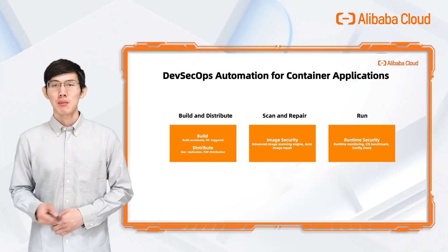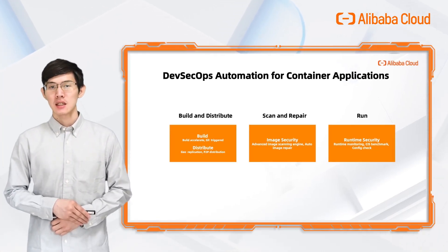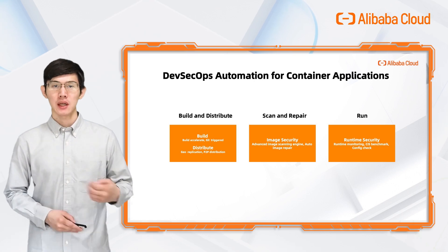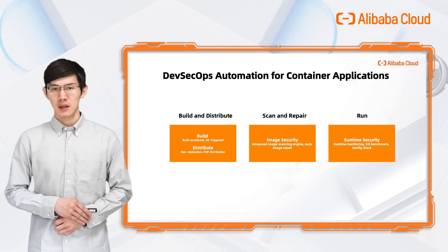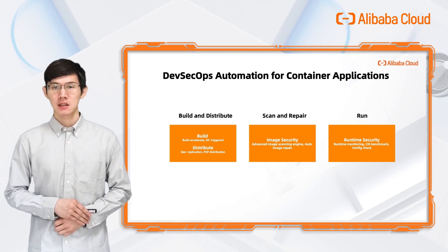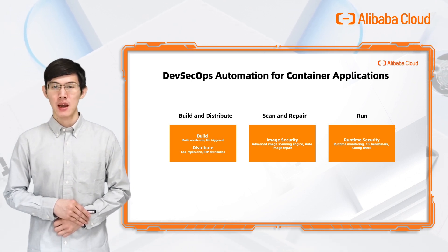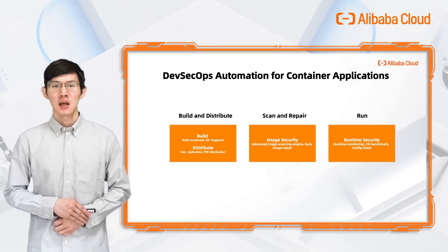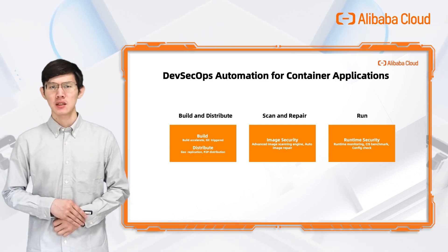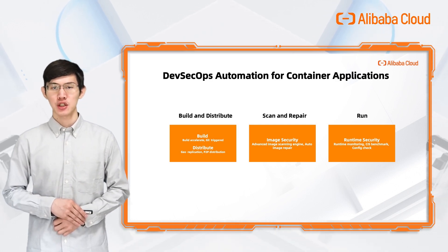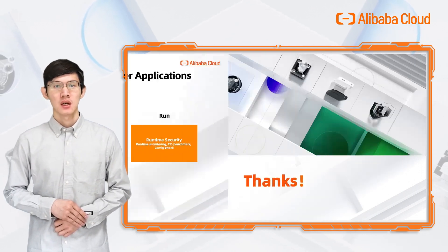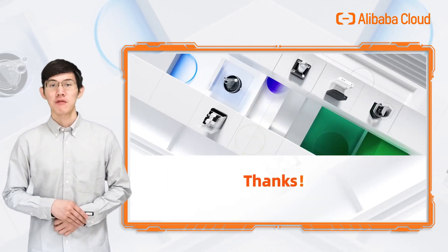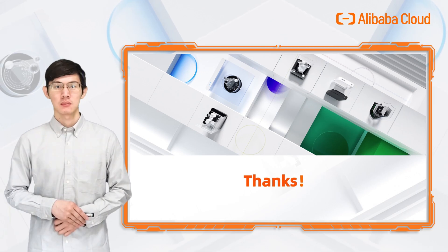In the demo we have shown that ACR takes care of image building and distribution. More importantly, ACR offers advanced scanning and auto image repair for container images, and it has built-in continuous delivery integration with Alibaba Container Services. Thanks for watching. Have fun with Alibaba Cloud. Bye-bye.